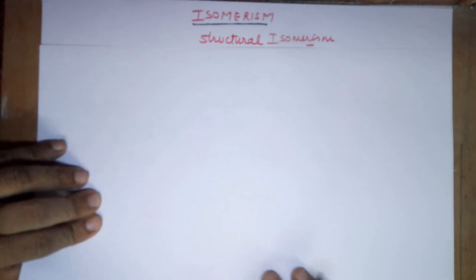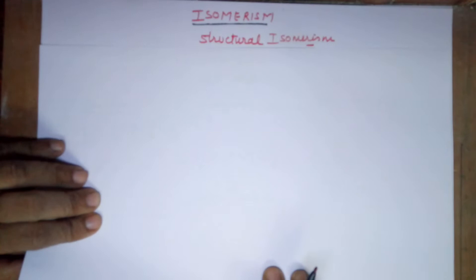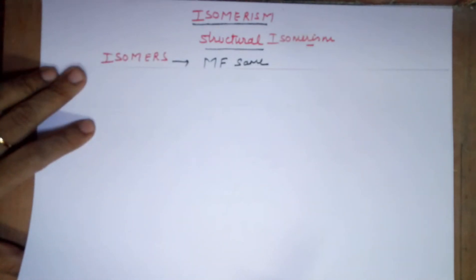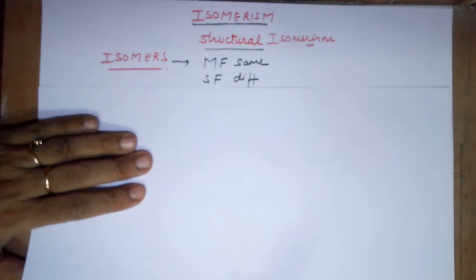Good morning! In today's class we'll be doing the topic called isomerism, and specifically that of structural isomerism. Before I go to the formula or the system of structural isomerism, we need to know what you mean by the word isomers. Isomers refers to those compounds which have got the same molecular formula but the structural formulas are different. You can draw many structures from the same given number of carbons, hydrogens, oxygens, whatever is given to you.